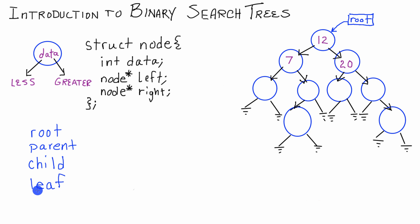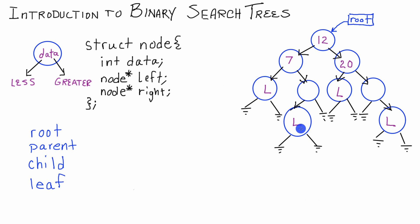The last term is leaf. I'll mark the leaf nodes here. A leaf node is a node that does not connect to any other nodes via its left and right pointers. It's connected to the tree via its parent node's pointer, but it doesn't point to any nodes itself. So leaf nodes do not have any children. Every node except for the root has a parent, and every leaf has a parent but doesn't have any children.